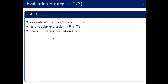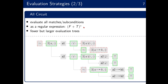There is also the all-circuit evaluation strategy, where we consider all matches and all sub-conditions of the graph condition. This can be expressed concisely as an f-or-t-star regular expression — every match and every sub-condition is evaluated, so the un-evaluated case does not happen. In this case, we get fewer but larger evaluation trees. For the given graph, this results in an evaluation tree where all matches are considered and all sub-conditions evaluated — and now we also find a second match for the A2 node.